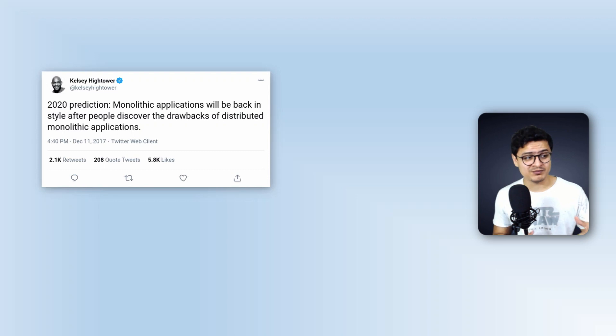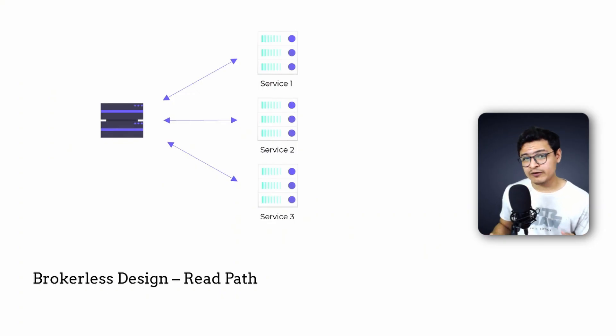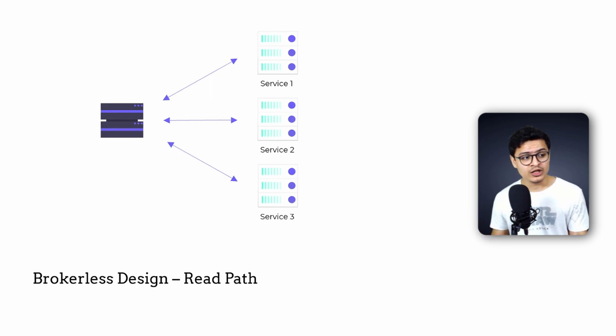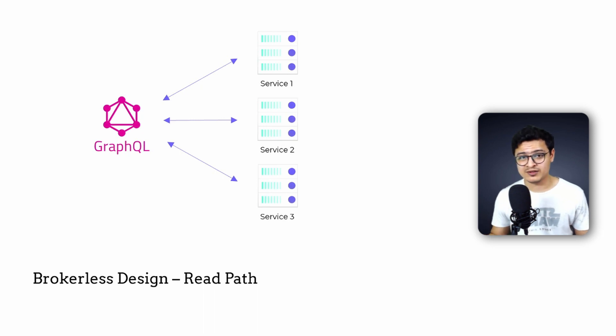A distributed monolith is worse than a traditional monolith because all your API calls are happening over the network — try debugging that. Many veterans have warned us about this problem, and several big projects have already shifted back to monoliths from microservices because of it. I'm not trying to scare you away from microservices — I use them a lot. I'm just saying that if your services are depending on each other a lot, you may want to merge them into one. An aggregator service helps in some use cases by becoming a single point of coupling. GraphQL is a great tool as an aggregator.